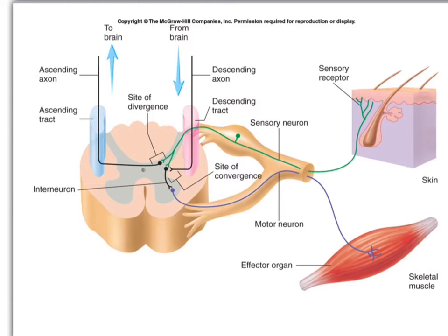The reflex is happening at the same time we're sending information up to the brain, so the brain understands why our muscles are moving. We also see a descending tract where the brain is directly telling this muscle what to do — telling that muscle or effector to contract.